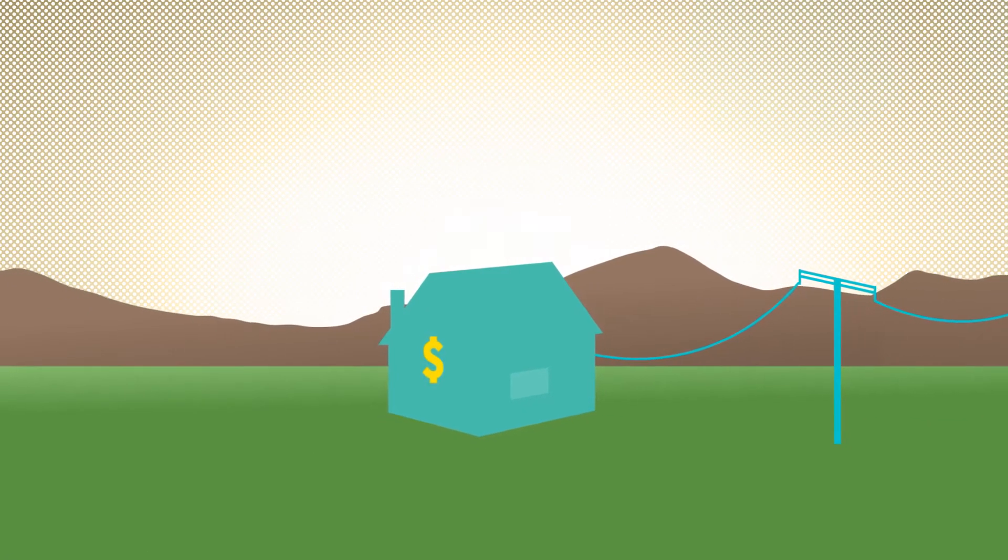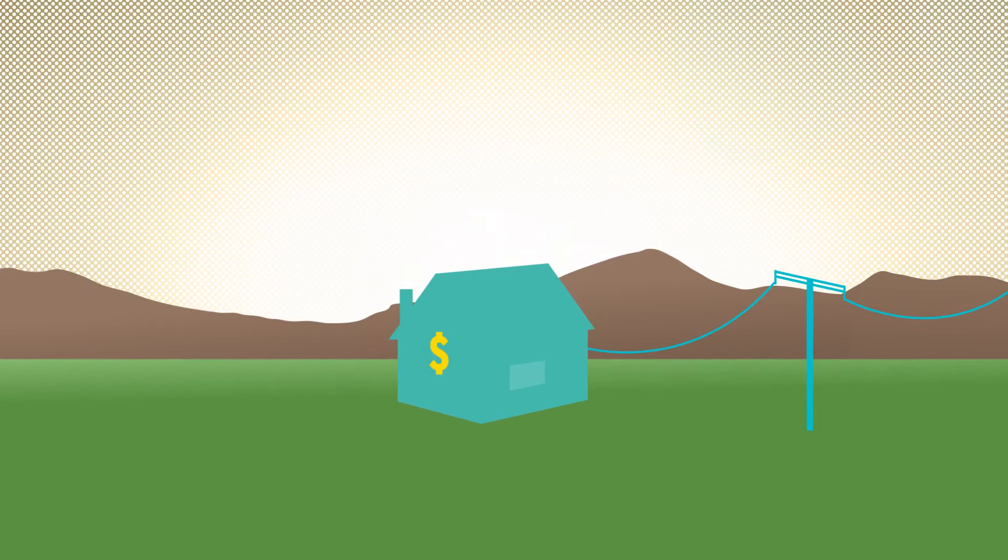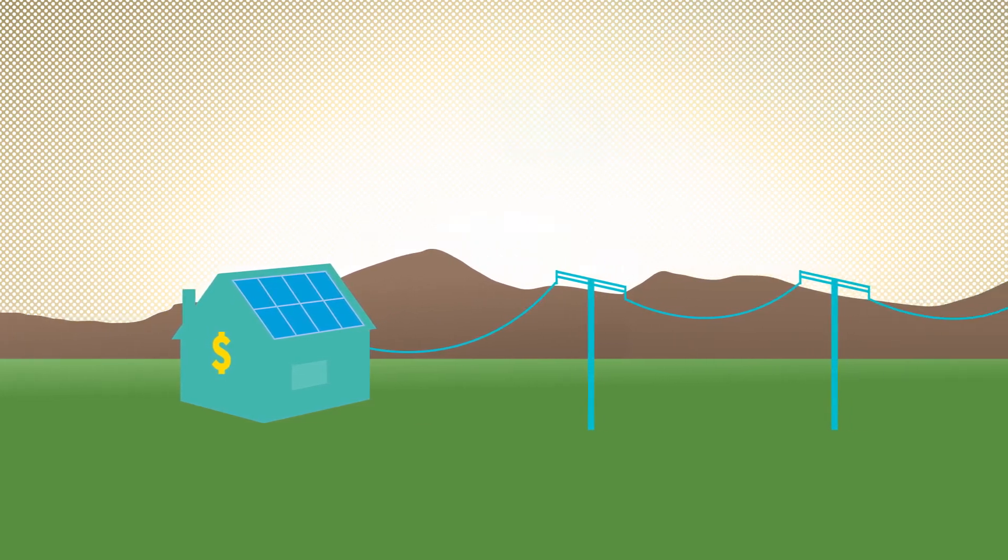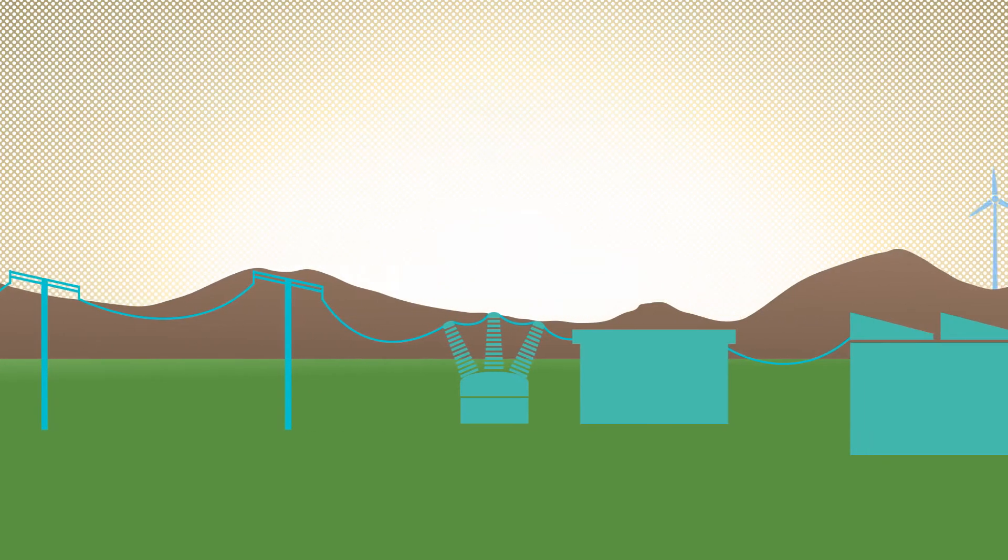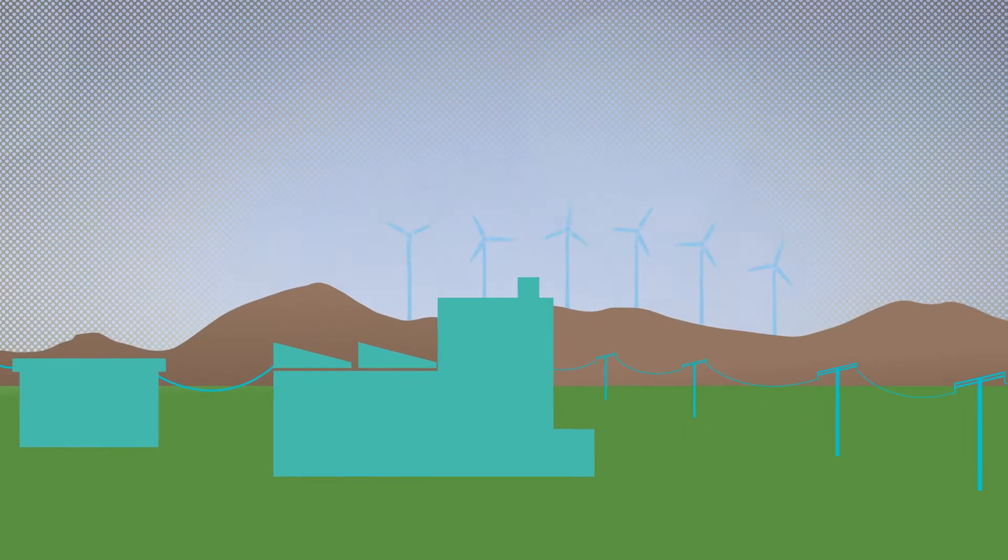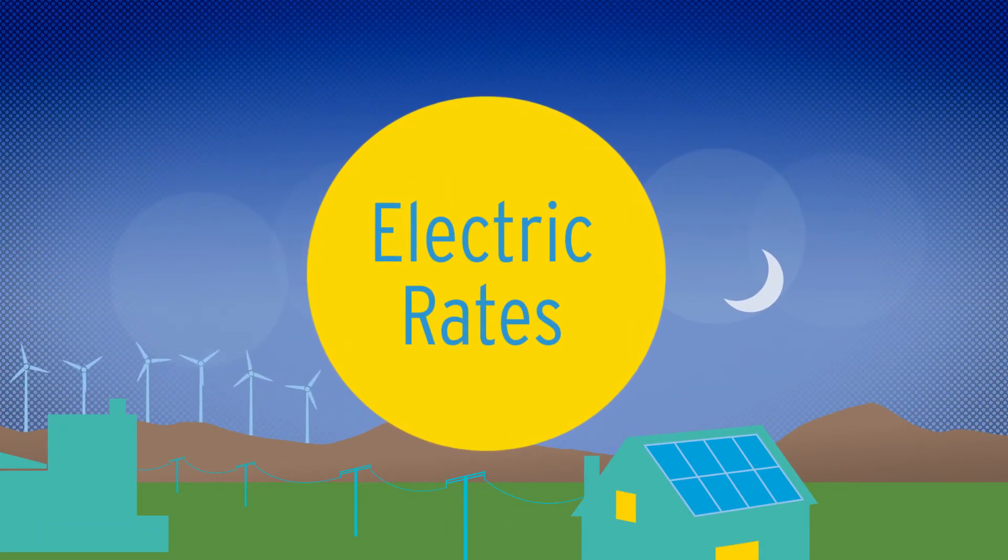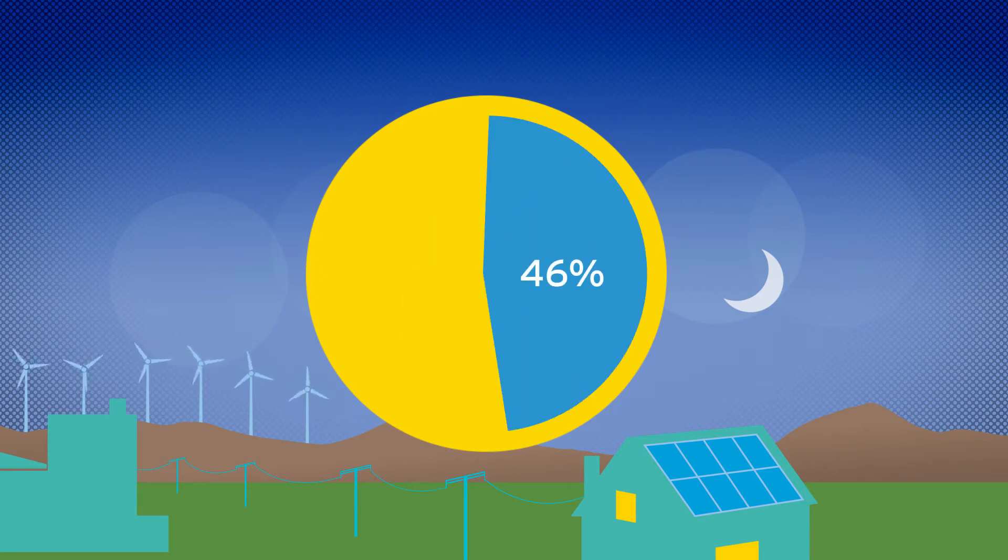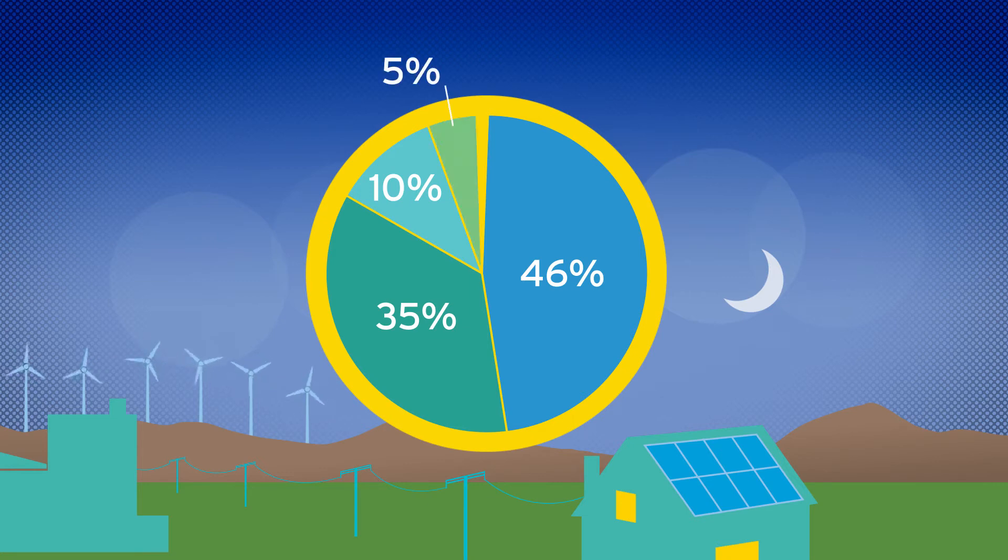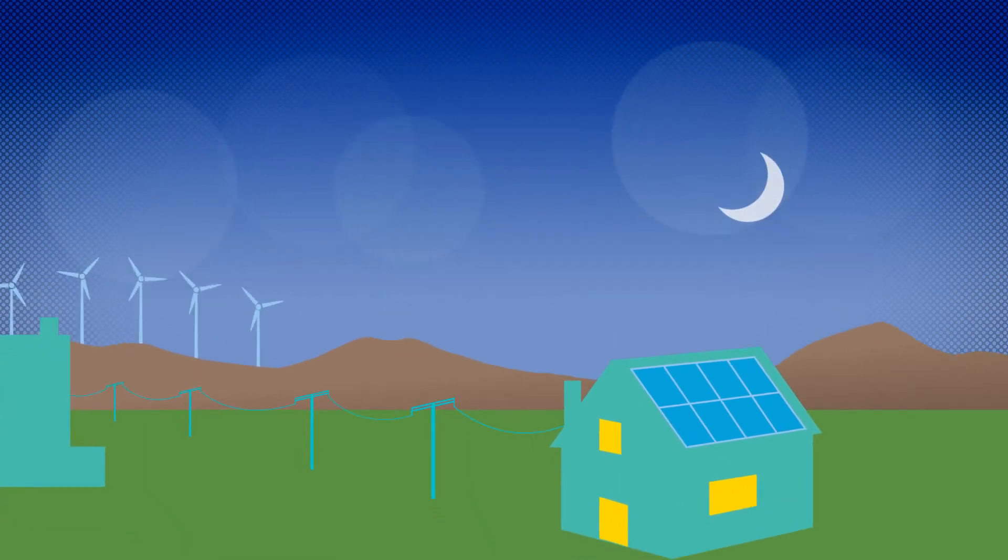If I install solar and draw less power, shouldn't I be paying less? The cost to serve customers with or without solar is nearly the same. When a customer installs solar, SDG&E still needs to provide and maintain the poles, wires, meters, substations, and power plants necessary to serve solar customers at night and on cloudy days. Electric rates include a number of different parts such as electricity, the transmission and distribution to get electricity to customers, costs for programs we offer, and an amount that covers the shifting of costs from lower use tiers to higher tiers. Solar customers benefit from all these services from SDG&E, often without paying their share of the costs.